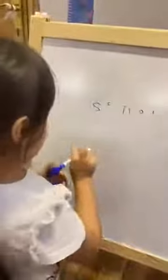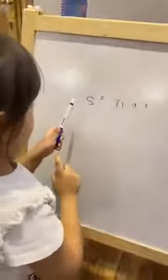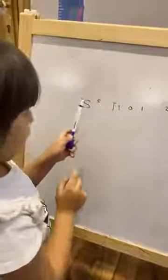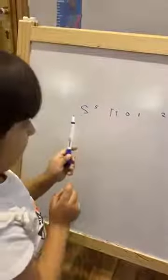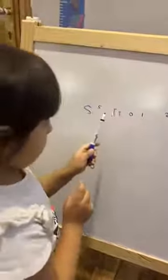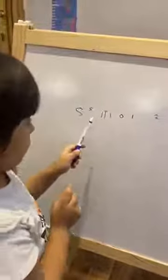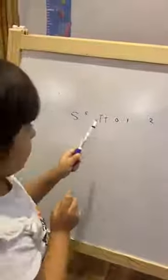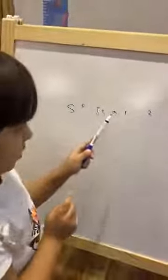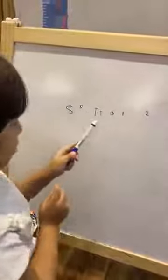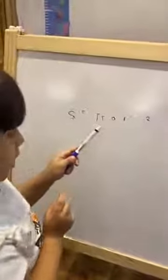Can you read? Can you read, Tala? S small. S big. T big. T small. Zero. One. Two.